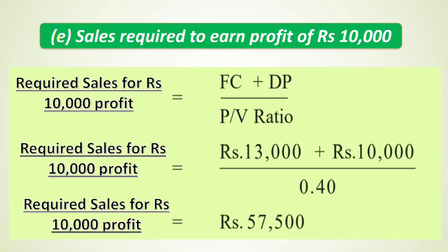Part E — Sales required to earn a profit of ₹10,000. The formula is: Fixed Cost plus Desired Profit divided by Profit Volume Ratio. Here, desired profit = ₹10,000, fixed cost = ₹13,000 (from Part B), and PV ratio = 0.40 (from Part A). Substitute the values to get the required sales.